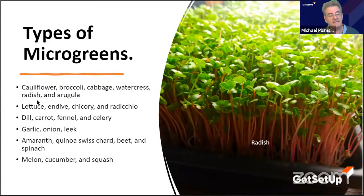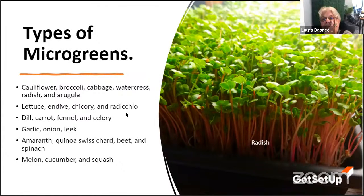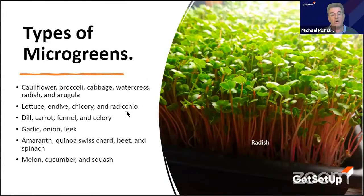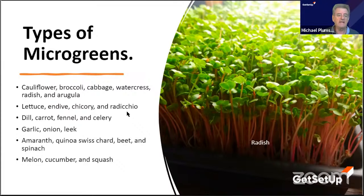The second one — lettuce and chicory — I call the aster family. That name is actually correct, it's not something I've pulled out of the air, but it's my shorthand.